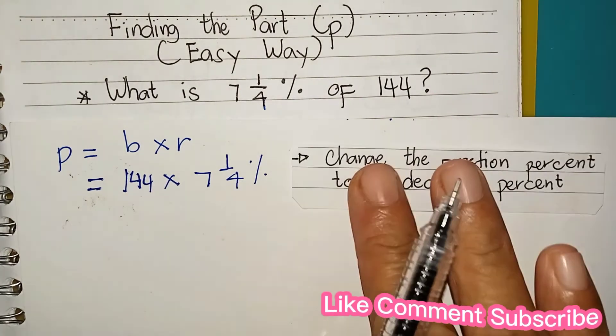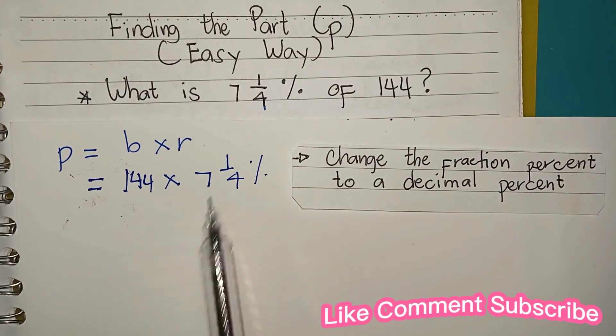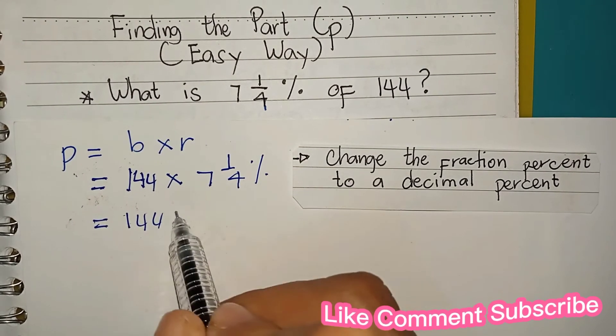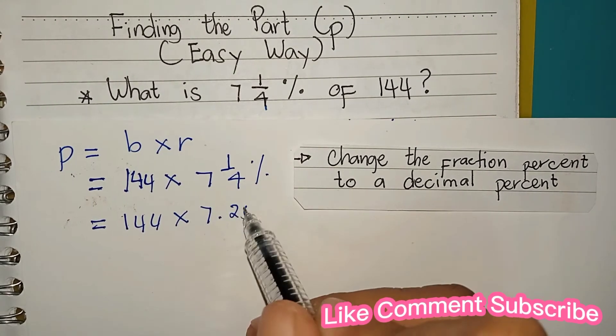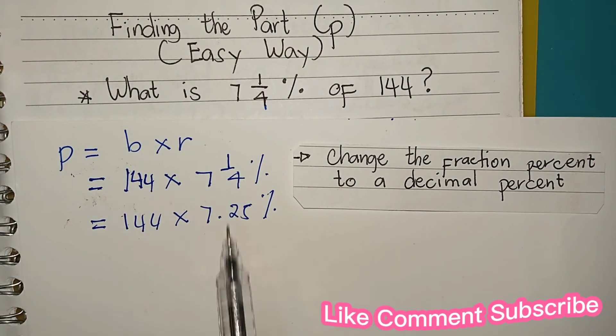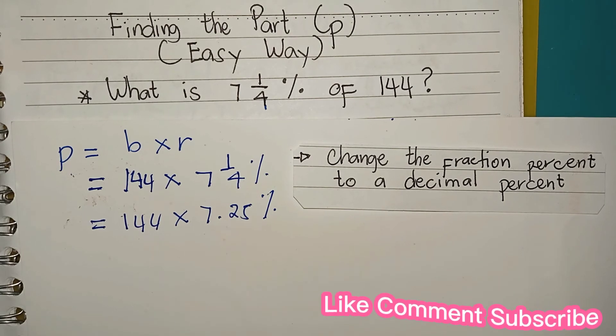Change the fraction percent to a decimal percent. Copy 144 times 7.25 percent, because 1/4 as a fraction is equivalent to 0.25 in decimal.